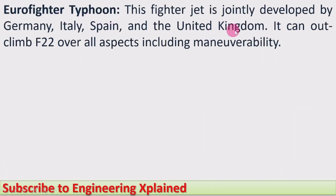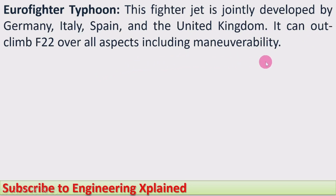Eurofighter Typhoon: This fighter jet is jointly developed by Germany, Italy, Spain, and the United Kingdom. It can out-climb the F-22 in several aspects including maneuverability. Maneuverability is the quality of carrying out a mission by a fighter jet. That means the Eurofighter is somewhat higher in capability compared to the F-22 in this regard.